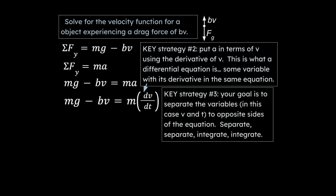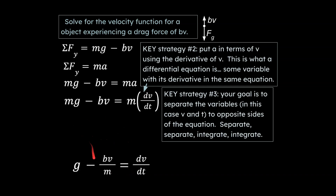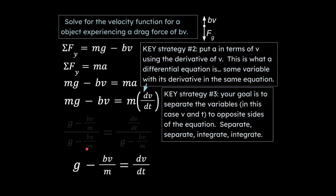Our key strategy is to separate all of the v's on one side of the equation and all of the t's on the other side — that's not easy to do here. The strategy is called separate, separate, integrate, integrate. First, we want to get rid of the m value to get dv and dt as much by themselves as possible. We divide every term in the equation by m, giving us g minus bv over m equals dv over dt. Next, we want to get v's on the right-hand side and t's on the left, and we can do this by dividing both sides by that g minus bv over m value.